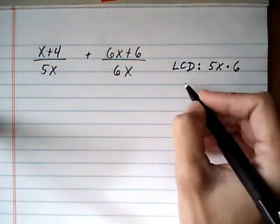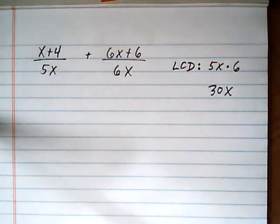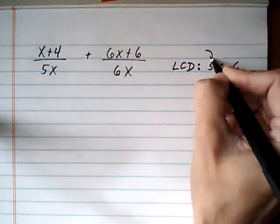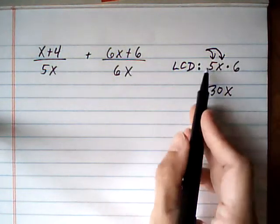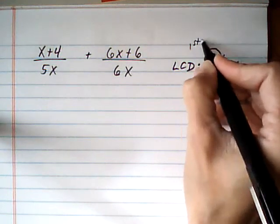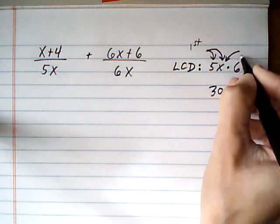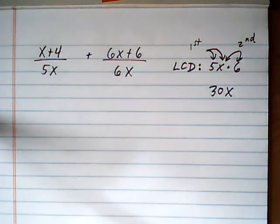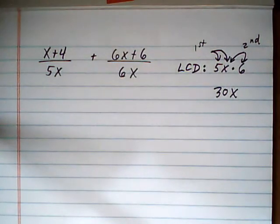And then that's it, those are our only two denominators, so our LCD is 30x. When you're making your LCD, what you want to make sure of is that both denominators are contained in it. So here's the first denominator, 5x, and the second denominator is 6x. This is the second denominator. So the LCD should contain all denominators without having extra pieces or extra factors that you don't need.